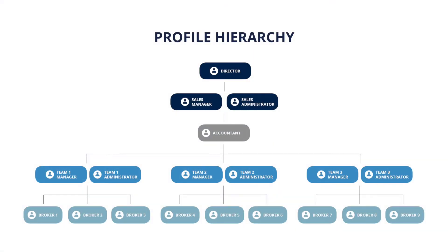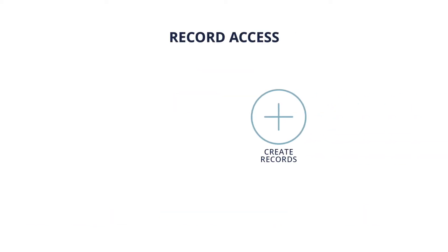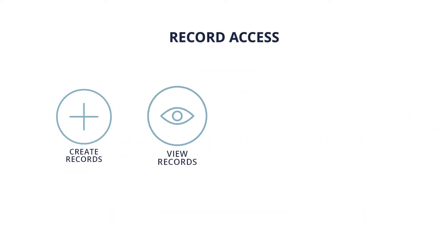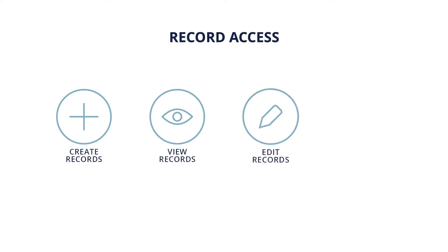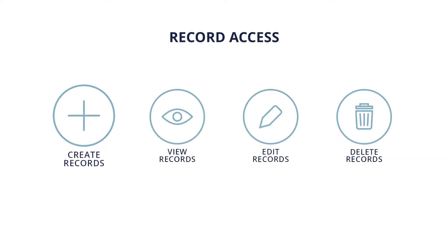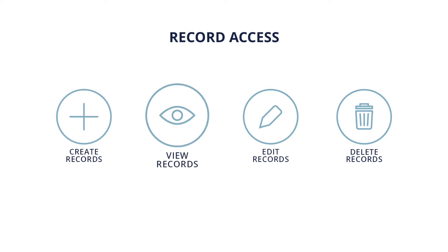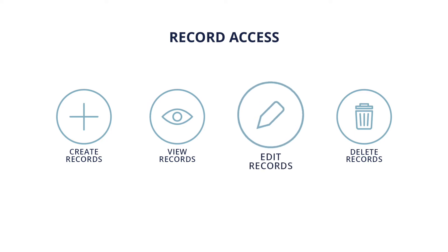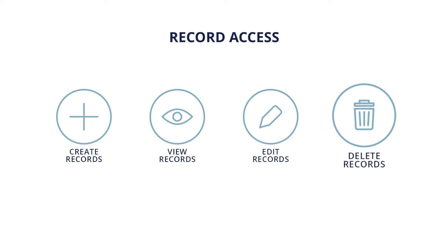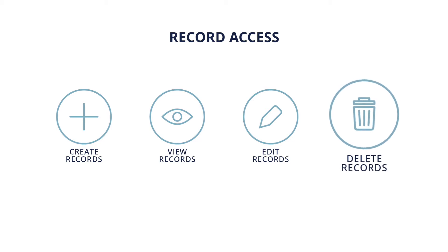There are various profile types in Property Nexus CRM that allow the company to control who has the ability to create and access a record. Record access is done in four different ways: creating, viewing, editing, and deleting. Create access allows a user to create a record of that type. View access allows a user to see the information in a record. Edit access allows a user to make changes to fields in the record. Delete access allows for the deletion of a record from the CRM.